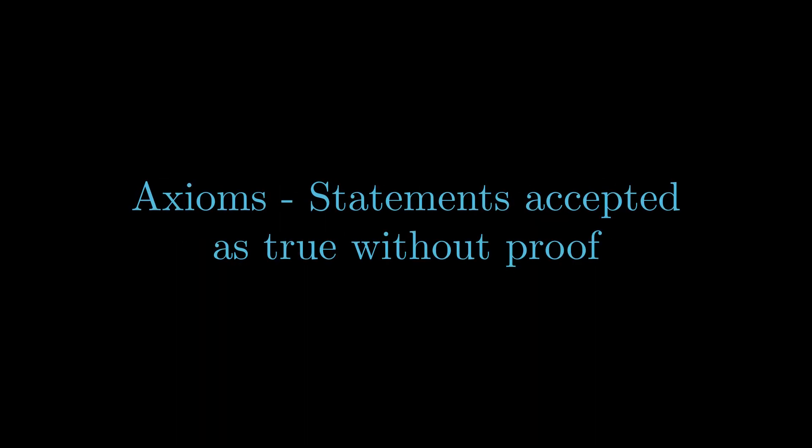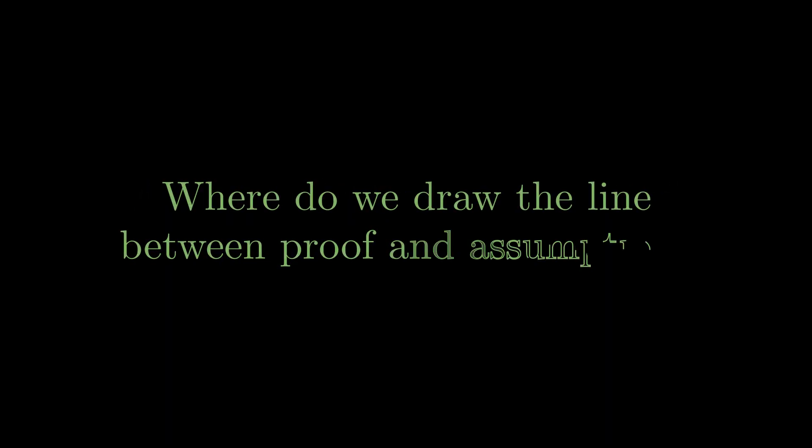A natural question arises. Where do we draw the line between proof and assumption? If we accept too many axioms, we risk contradictions. Too few, and it becomes challenging to prove anything substantial.